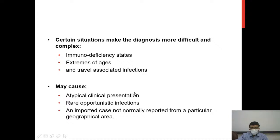In immunodeficiency states or extremes of age, the presentation may not be typical. You may see rare opportunistic infections — something not normally present in a particular geographical location, or a zoonotic infection from animals. An imported case not normally present locally may be missed if you haven't taken a correct travel history. So you need to know not only common local parasites but also those seen in other countries.